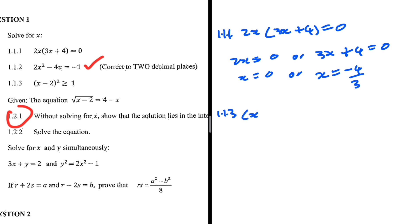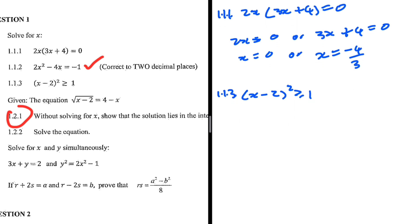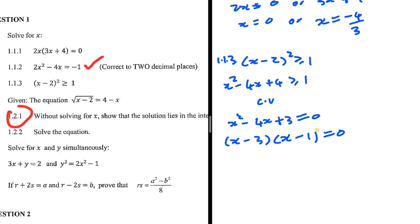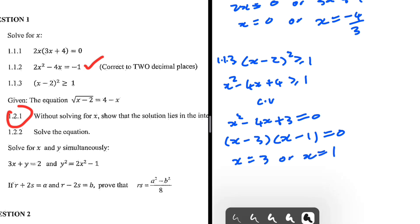In 1.1.3 we have an inequality: x minus 2, everything squared, being greater than or equal to 1. Expanding, we get x squared minus 4x plus 4 greater than or equal to 1. For the critical values: x squared minus 4x plus 3 equals zero, which factorizes to x minus 3 multiplied by x minus 1 equals zero.